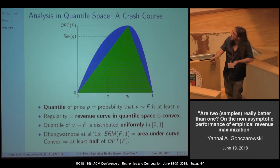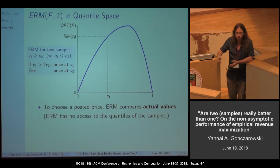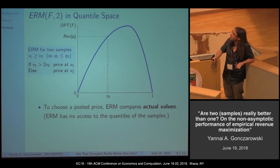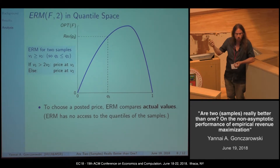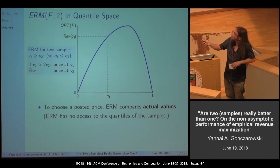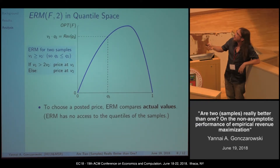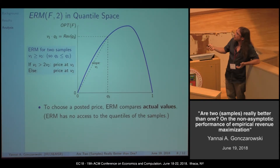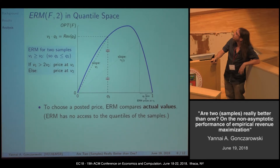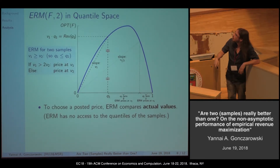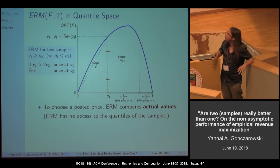With two samples, ERM doesn't compare quantiles — it doesn't even know the quantiles of the samples it receives. It compares values: it wants to know whether the highest value is more or less than twice the lower sample value, in order to decide which price to post. So we have Q1, the lower quantile (the quantile of the higher sample), and the revenue from Q1. The value is the slope V1. To determine for which quantile pairs ERM prices at V1 rather than V2, we look at the line with half the slope and find a threshold: if Q2 (the quantile of the lower value) is above that threshold, ERM prices at V1; otherwise at V2. This is a weird mixture of quantiles and values, and it can be shown that ERM using two samples is not related to any weighted area beneath the revenue curve.